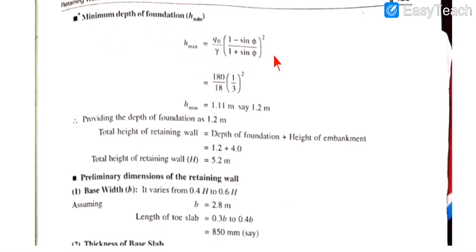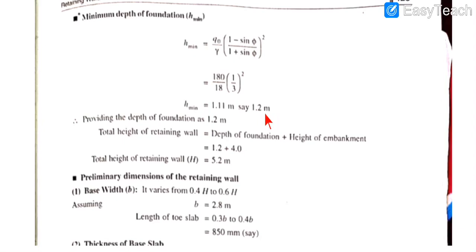Further, we find the minimum depth of foundation h_min. The formula is h_min = (q₀ / γ) × [(1 − sin φ) / (1 + sin φ)]², which is also called Rankine's formula for depth of foundation. Calculating this, we get h_min = 1.11 m, which we round up to 1.2 m.